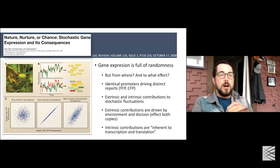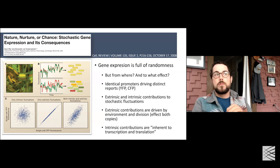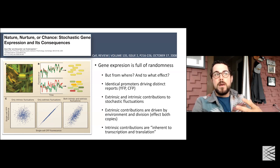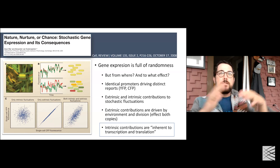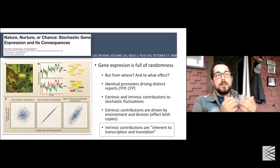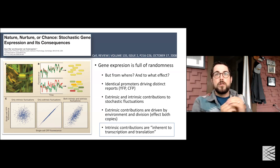The intrinsic and extrinsic contributions combine to produce the total fluctuations. The extrinsic contributions are most closely associated with environmental differences and cell divisions, with timescales associated with those processes. The intrinsic contributions are more inherent to the act of transcription and translation, with different sources and timescales. Today I'm focusing on these intrinsic contributions — how the genome and gene regulatory mechanisms contribute to fluctuations in specific genes, giving rise to temporal fluctuations in individual cells or fluctuations across a population.